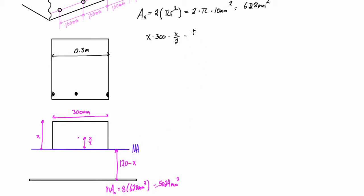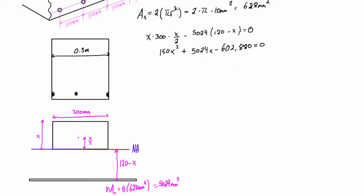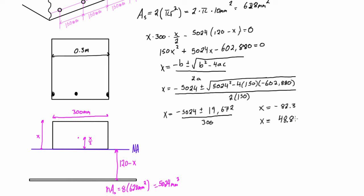Expanding that out gives us 150x² plus 5024x minus 602,880 equals zero. If you're doing homework, just throw this into Wolfram Alpha, but on a test use the quadratic formula. You'll find that x equals 48.8 millimeters.